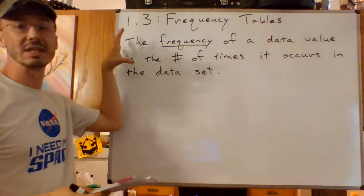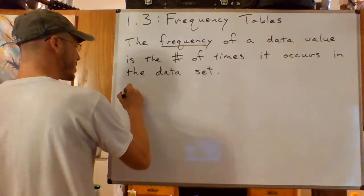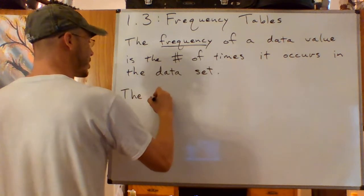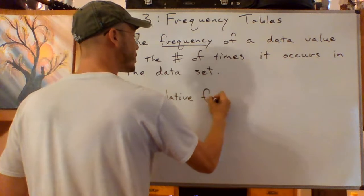The frequency of a data value is the number of times it occurs in the data set. And we're going to have an example of this in just a moment, but what goes along with this is the relative frequency.